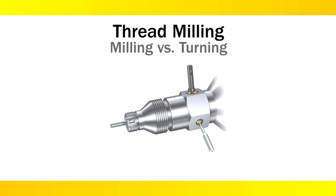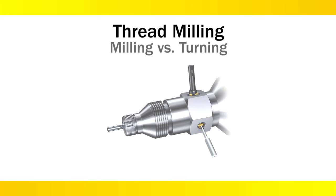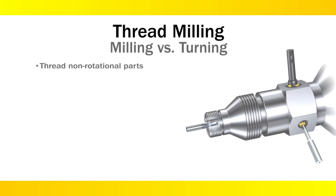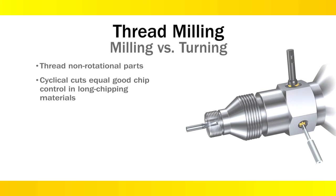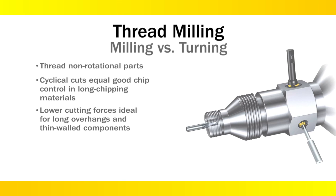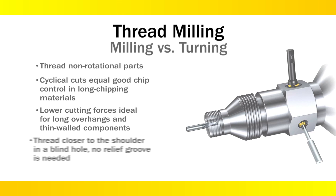While not as widely used as thread turning, it has the primary advantage of being able to thread non-rotational parts, plus large components that are difficult to machine on a lathe. Thread milling uses lower cutting forces, making it ideal for machining long overhangs or thin-walled components. Thread milling can also be applied closer to the shoulder in blind holes, making a relief groove not needed, unlike that in thread turning.